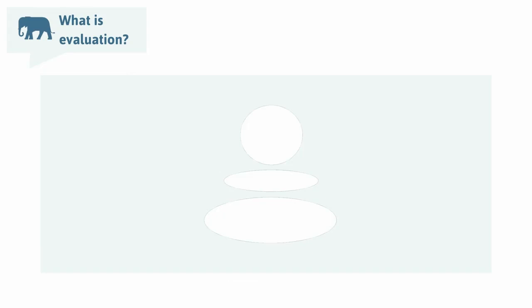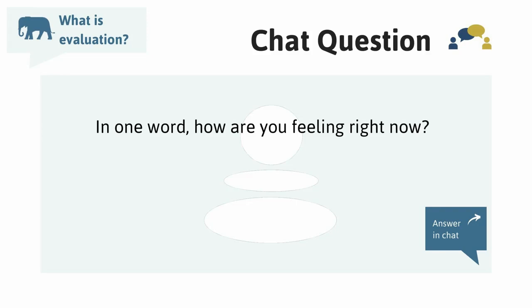I want to pause and take a moment to check in. Share one word in the chat window that describes how you're feeling right now. I see responses like intrigued, comfortable, excited, hopeful, engaged, and also some frazzled and unsure. For those experiencing some confusion, let's go back to Jen's project and see how she should think about these four evaluation steps we just walked through.